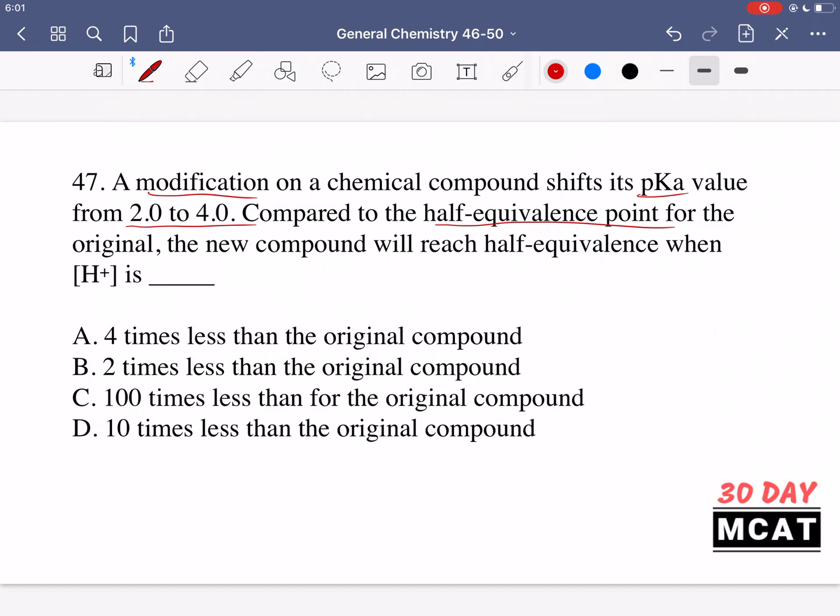If we want to go from the pKa back to the concentration of protons, from pH back to concentration of protons, it's just 10 to the exponent of negative of whatever pH we're talking about.